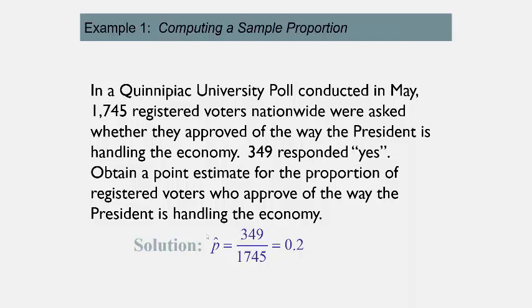This 0.20 is an estimate for the population proportion. There's no way to call every registered voter, so we take a sample and this sample proportion estimates the real population proportion.